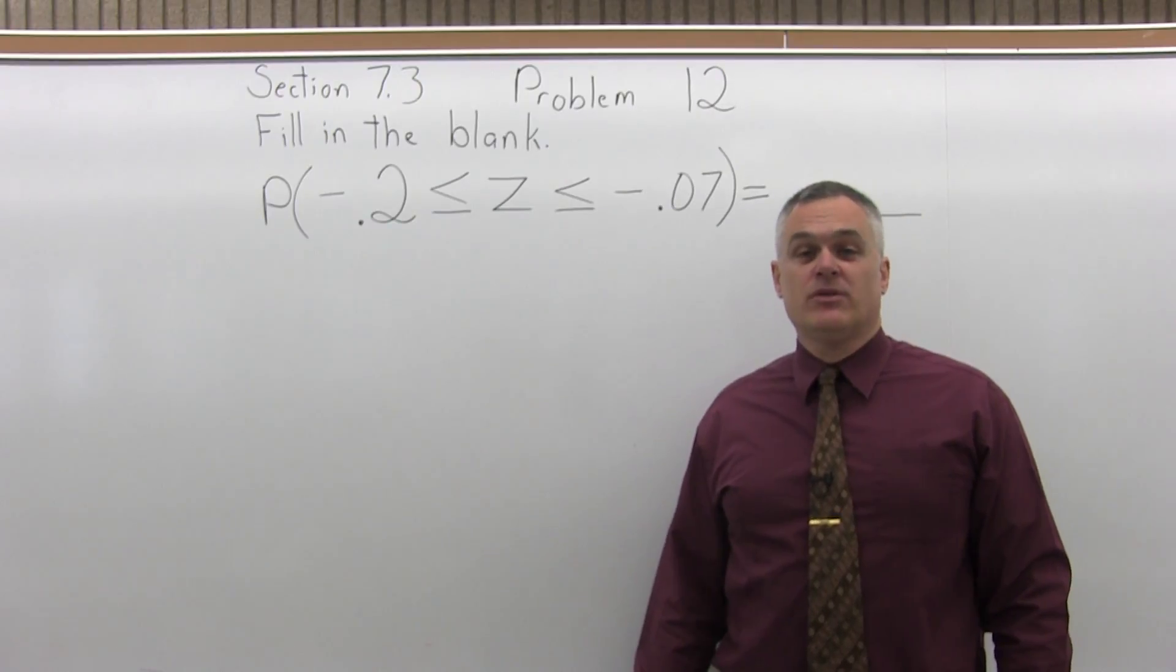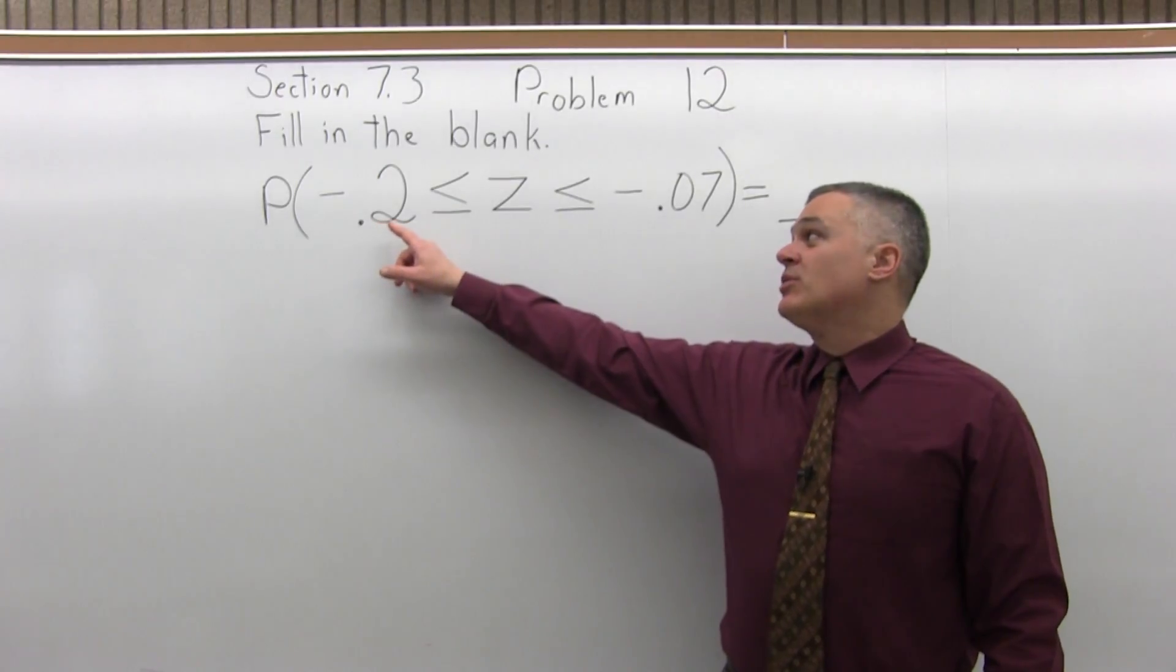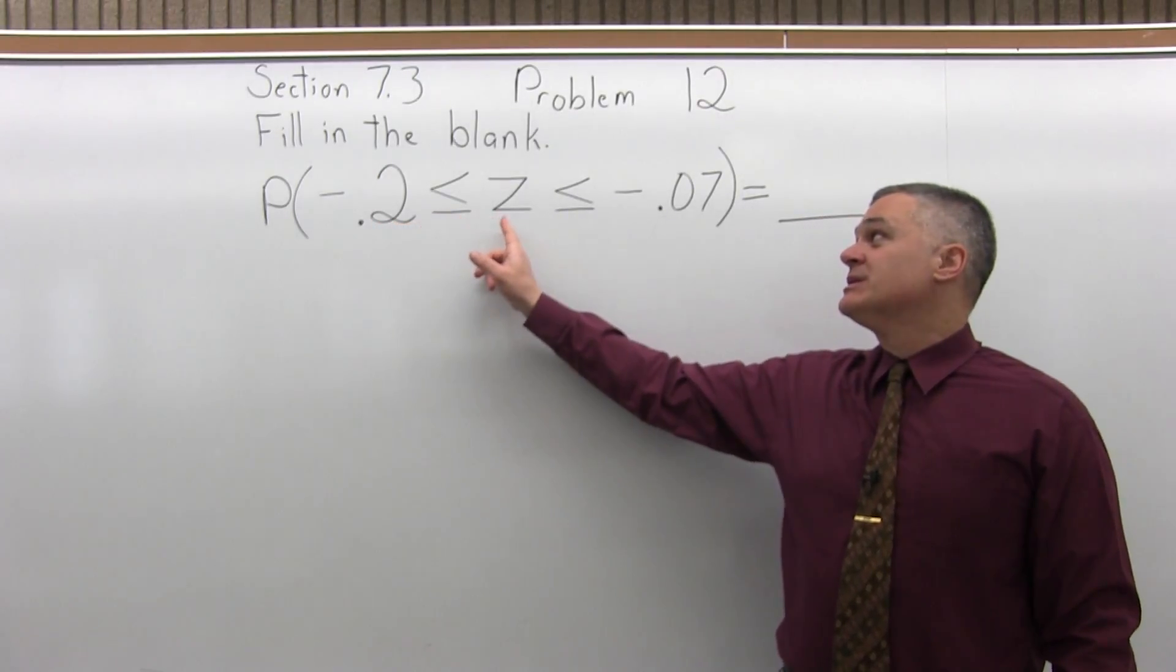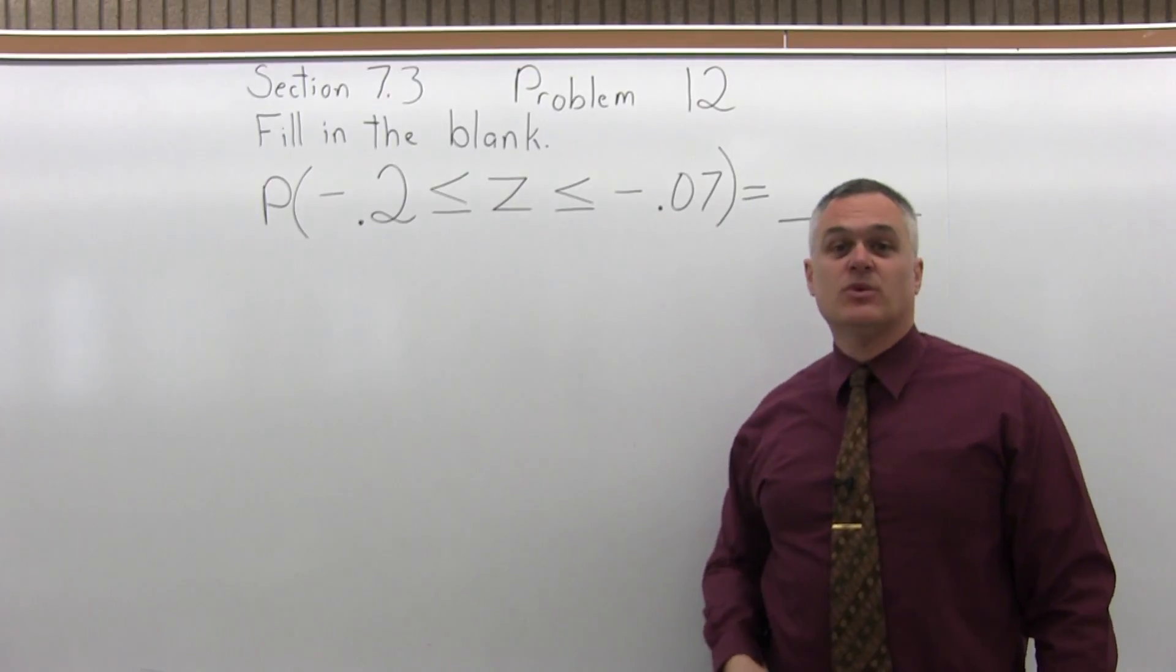This is Section 7.3, Problem number 12. It says fill in the blank. The probability that negative 0.2 is less than or equal to z is less than or equal to negative 0.07 equals blank.